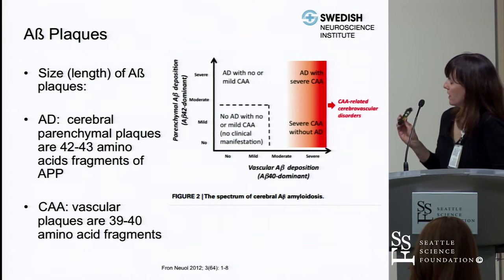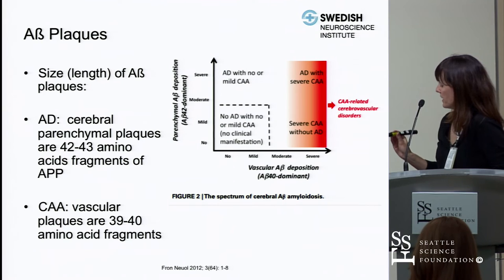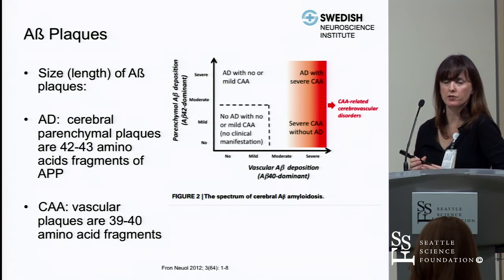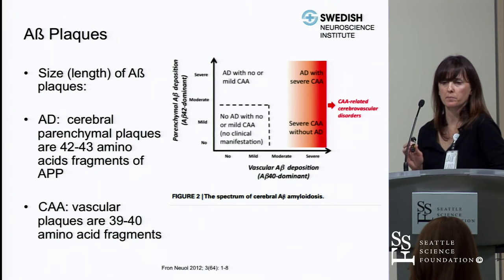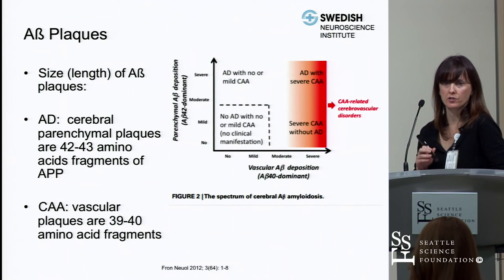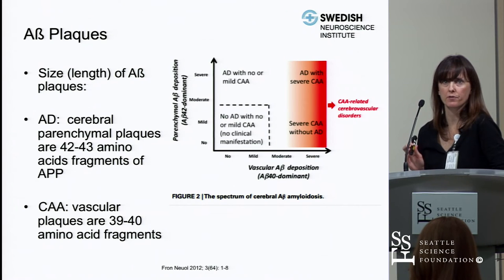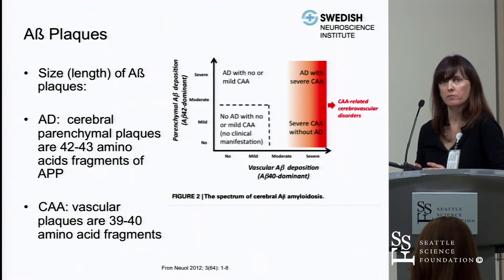A 2012 publication illustrates the difference in amyloid beta plaques between Alzheimer's and CAA. Both involve amyloid beta plaques, but in Alzheimer's disease, senile plaques are deposited in the brain parenchyma as 42 to 43 amino acid fragments, whereas in cerebral amyloid angiopathy, plaques are deposited in the cerebral blood vessels as 39 to 40 amino acid fragments.